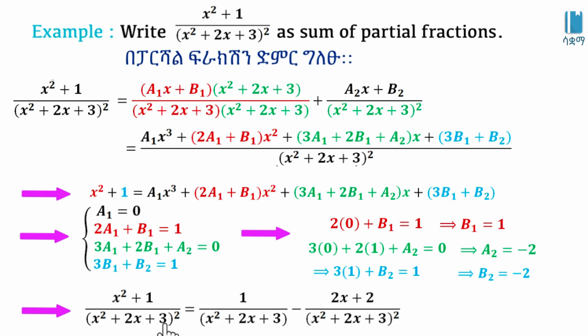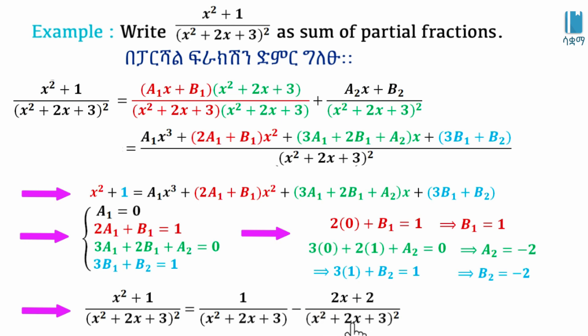The final partial fraction decomposition is: 1 over (x² + 2x + 3), minus (2x + 2) over (x² + 2x + 3) squared. This is the completed partial fraction decomposition.